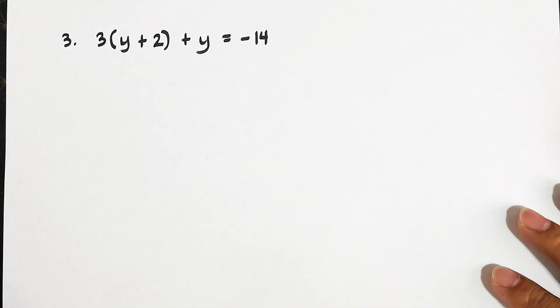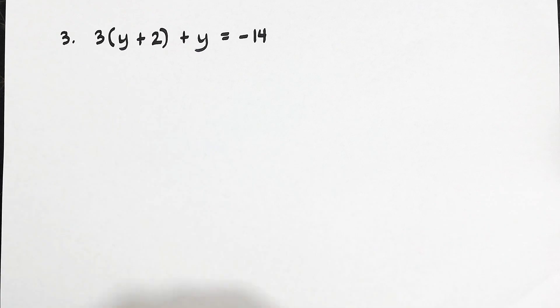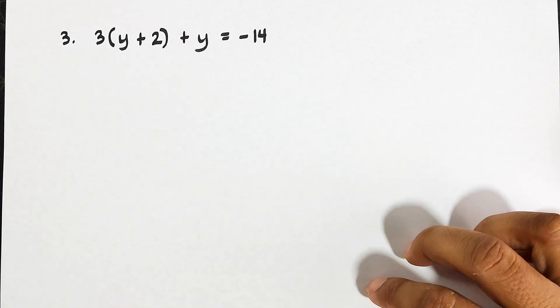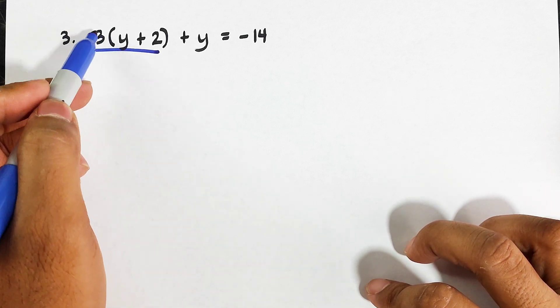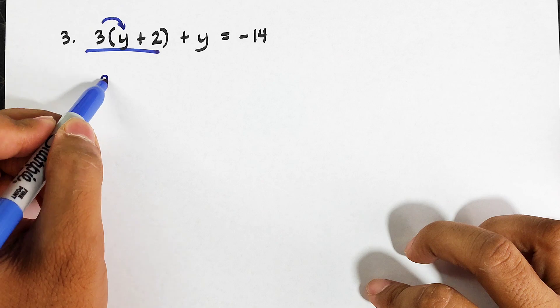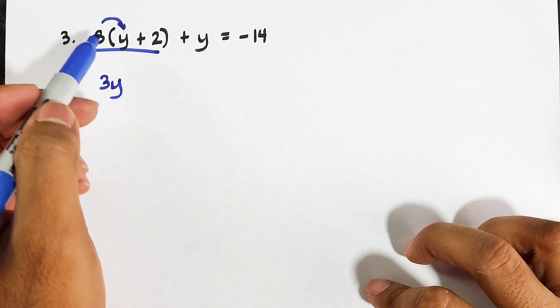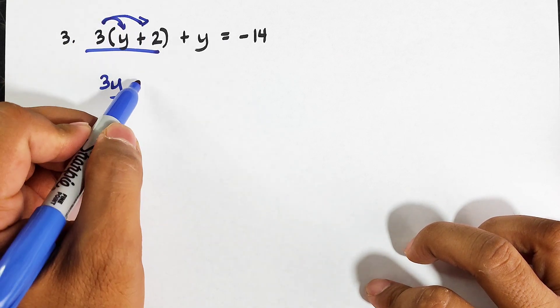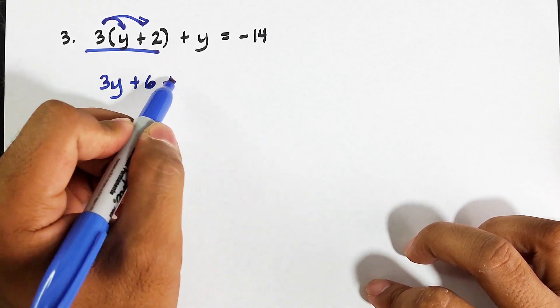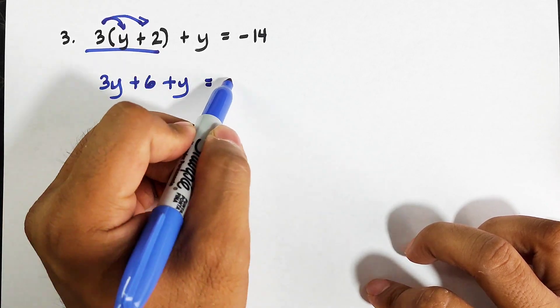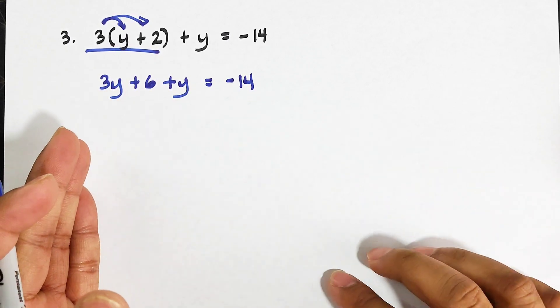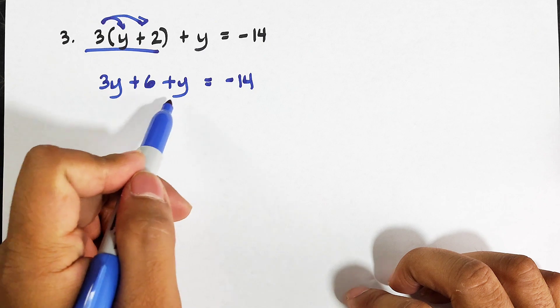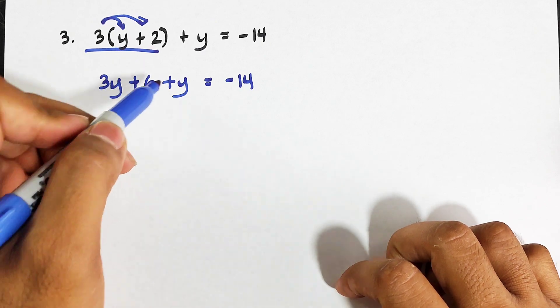For number 3, this is our equation: 3(y + 2) + y = -14. So this will be simplified by the distributive property. 3 times y, that is 3y, then 3 times 2, that is plus 6. Copy plus y is equal to negative 14. This variable y is also on the left side of the equation, so basically we can combine these two terms. That is 3y + 1y, that would be 4y.